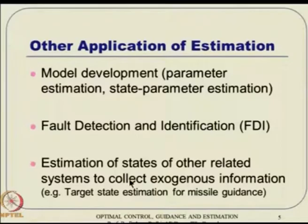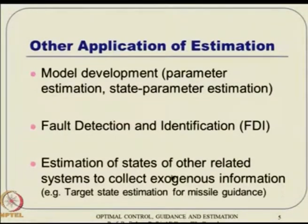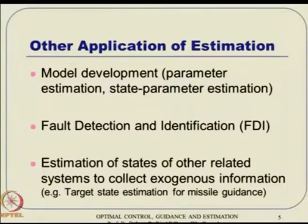Essentially, these are estimation things — estimation of states and other related quantities to collect exogenous information. The target information in missile guidance problems is typically done through our own sensor. The target is never going to declare its own position, velocity, or intentions. It is the missile's job to find out what is going on with the target. So sometimes the exogenous input necessary for computing the command is done through estimation. In my view, unless we know something about estimation, the entire control theory is only half explored and may not be complete.